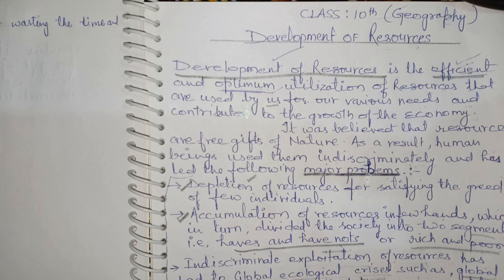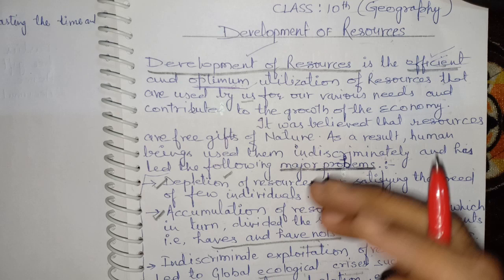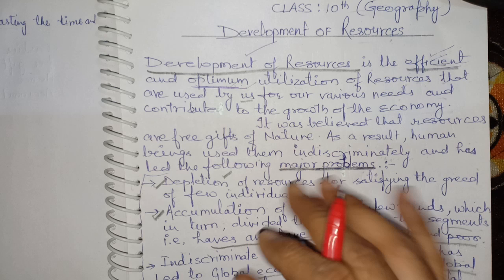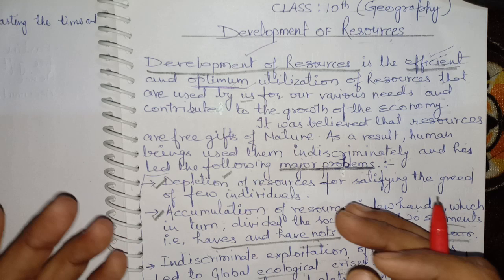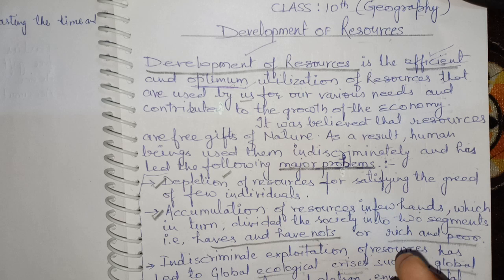Now I move to the next topic: Indiscriminate Use of Resources. Indiscriminate use of resources means using resources carelessly — some people use more than needed, waste them unnecessarily, or cause damage to resources without proper understanding of their value. Another issue is that within society, some people have more resources while others have less. All these things will be described in this topic.